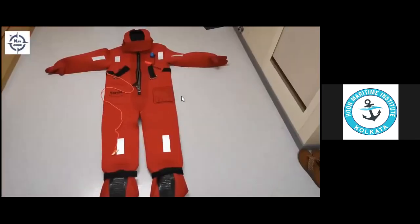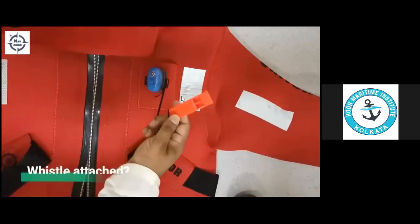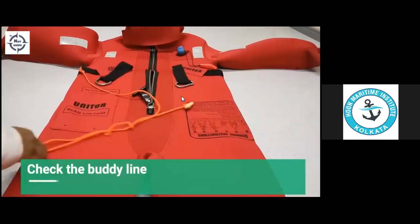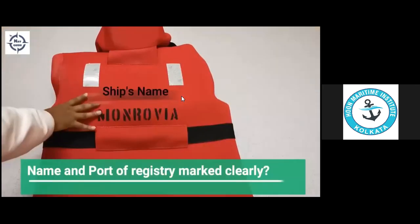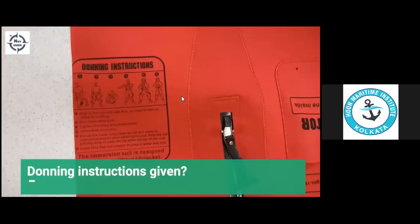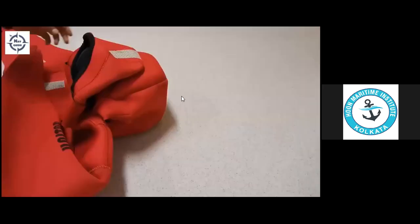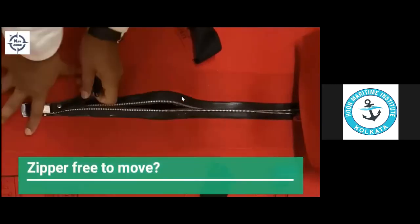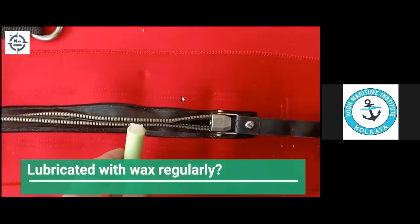Now checking the immersion suits. Check it is in satisfactory condition. Light is working properly and verify the expiry date of the light. Whistle should be attached. Check the condition of the body line. Check the retro tapes. Name and port of registry clearly marked. Donning instructions are given clearly. For those without inherent buoyancy, check the condition overall. The zipper should be moving freely and should be waxed regularly.